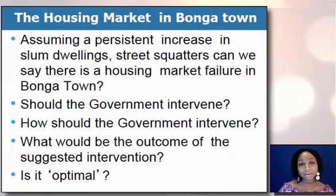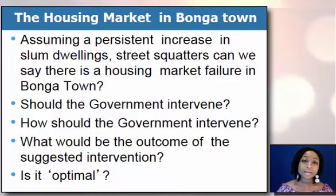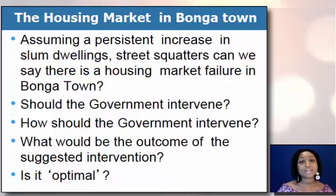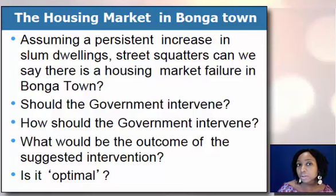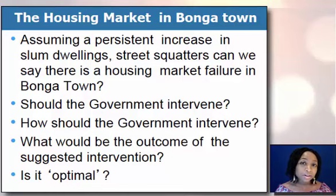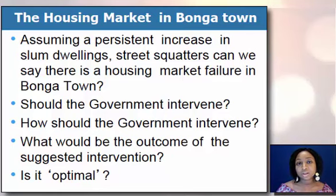Given this background and what we've learned from the previous lectures, here's an exercise to think about. Imagine an imaginary town called Bunga Town and assume there's a persistent increase in slum dwellings and street quarters — meaning there's a problem with the housing market. Do you think the government should intervene? How should the government intervene? What would be the outcome of such intervention? And would that intervention be optimal? Recall that an optimal policy is one in which the marginal cost and the marginal benefits of implementation are equal.